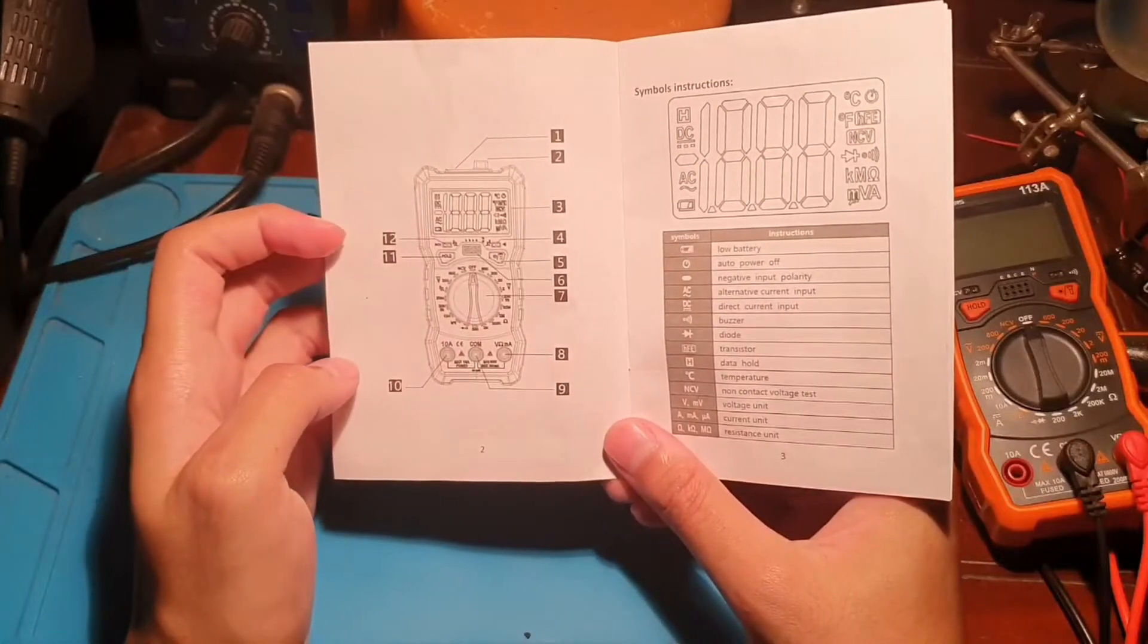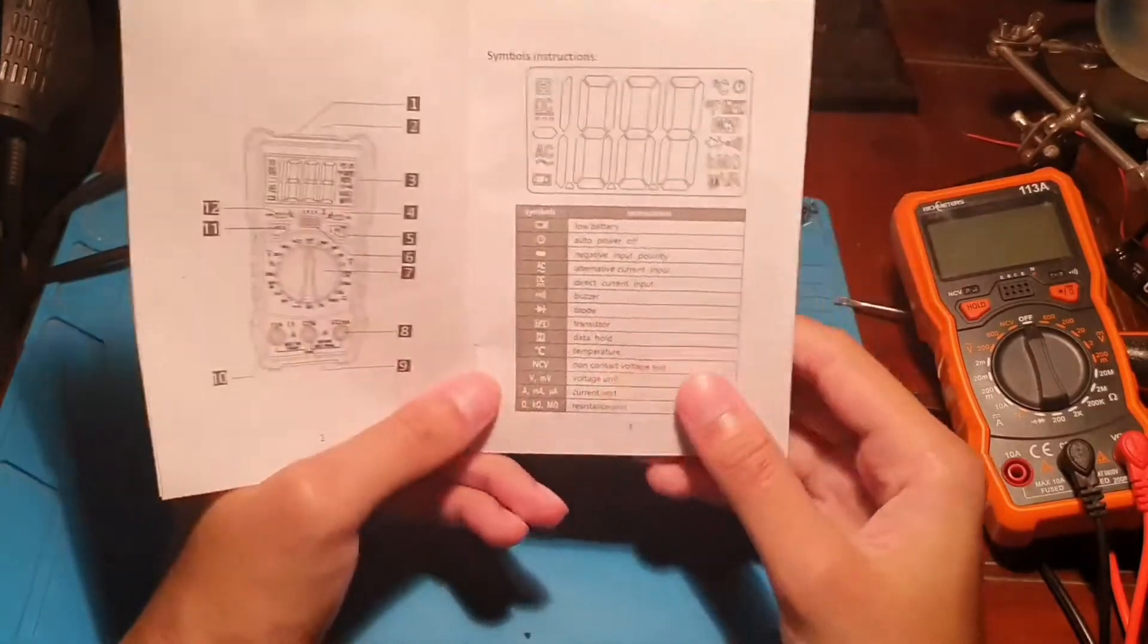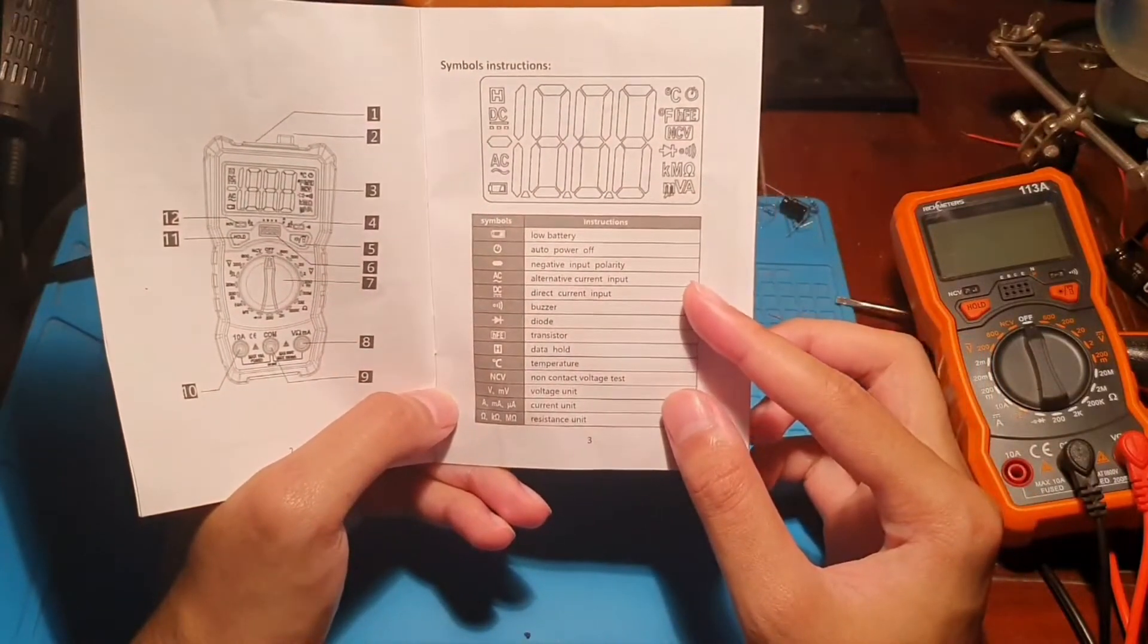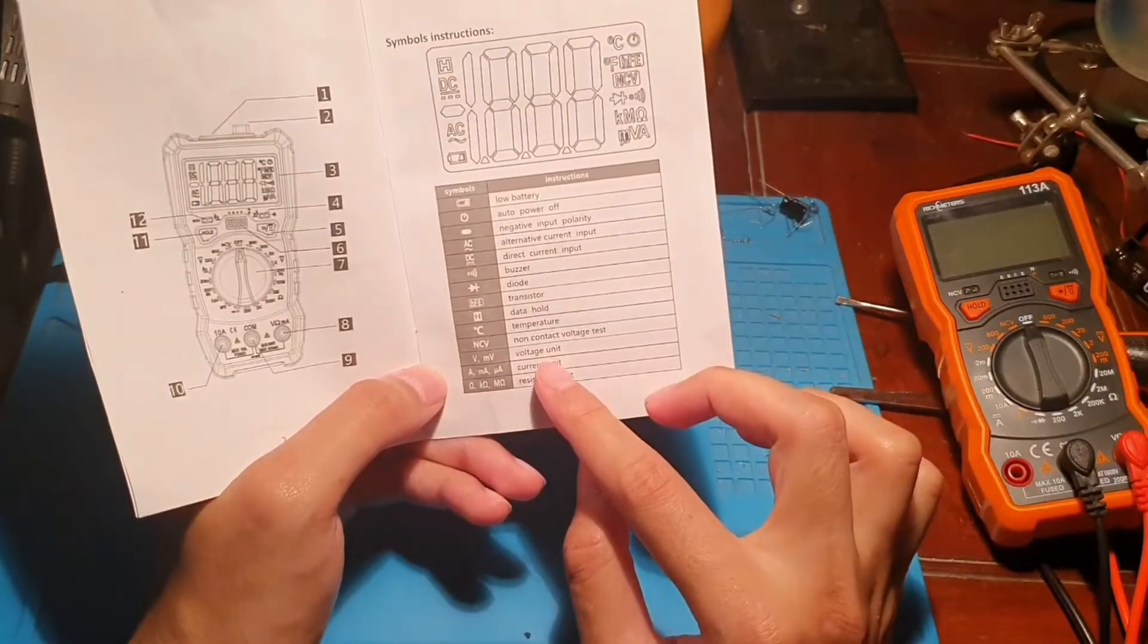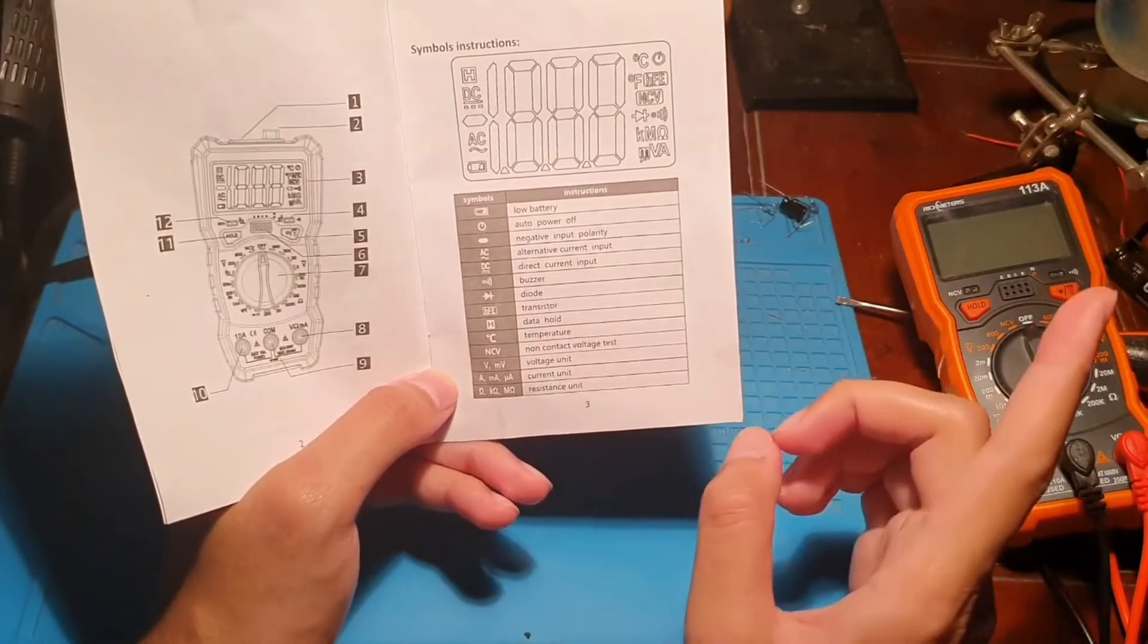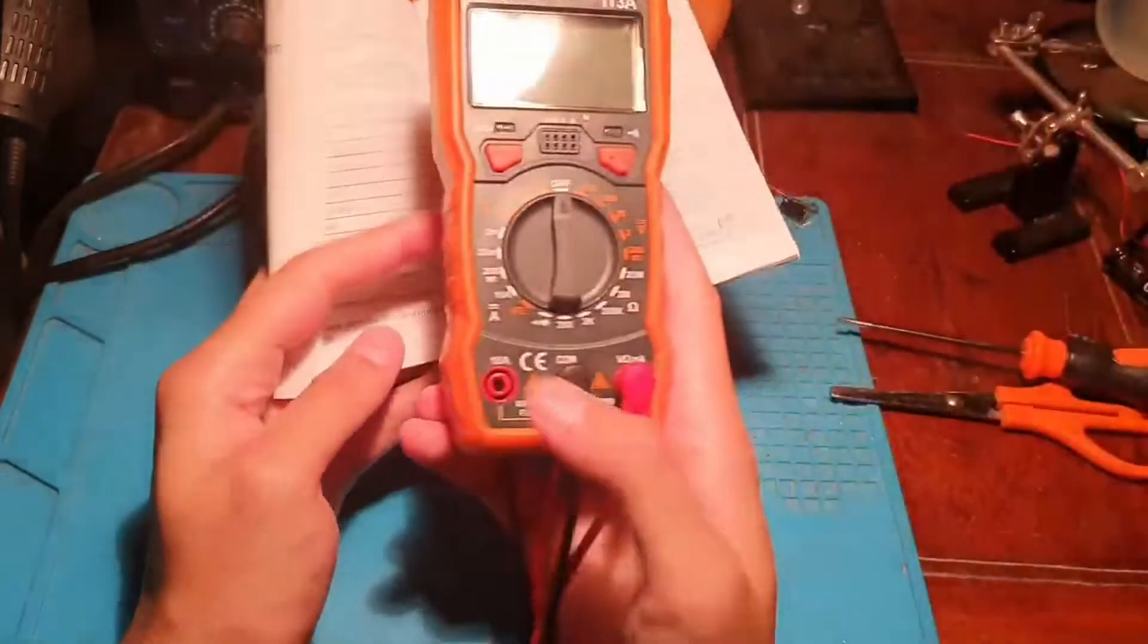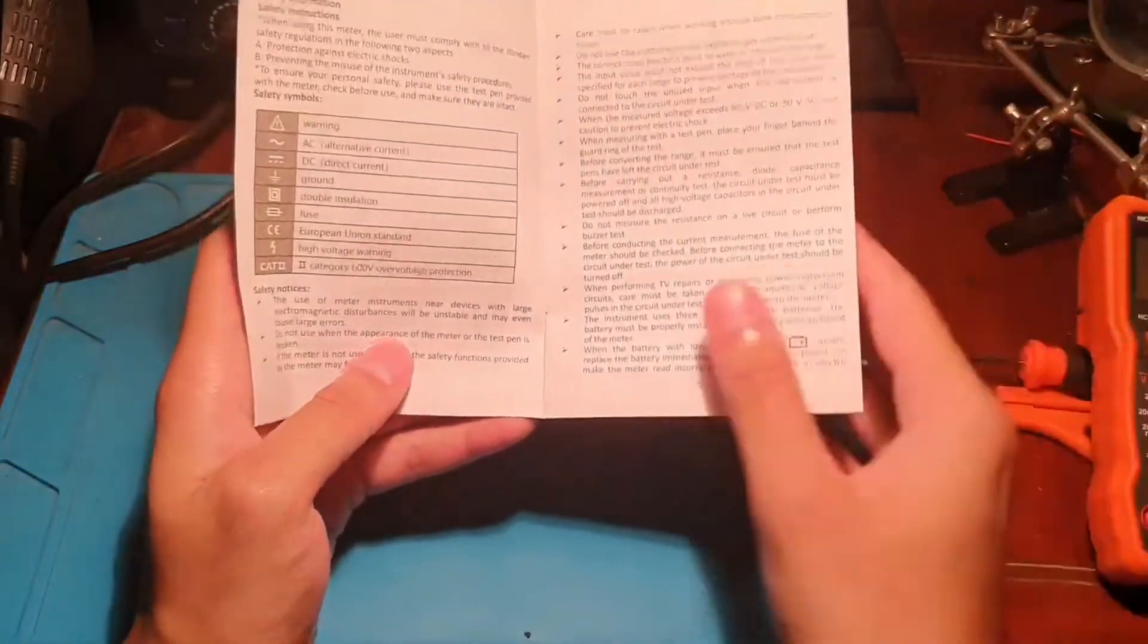We have around 12 important parts here. The LCD display, low battery indication, auto power off, negative input polarity, AC input, DC input, buzzer, non-contact voltage test, temperature - I'm not sure if this model has temperature, maybe other models. We have a warning sign, and this is a CAT2 rating multimeter.